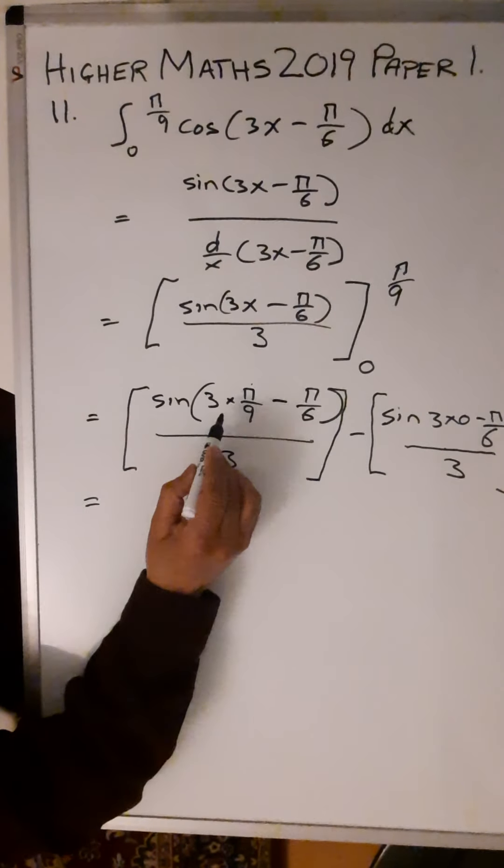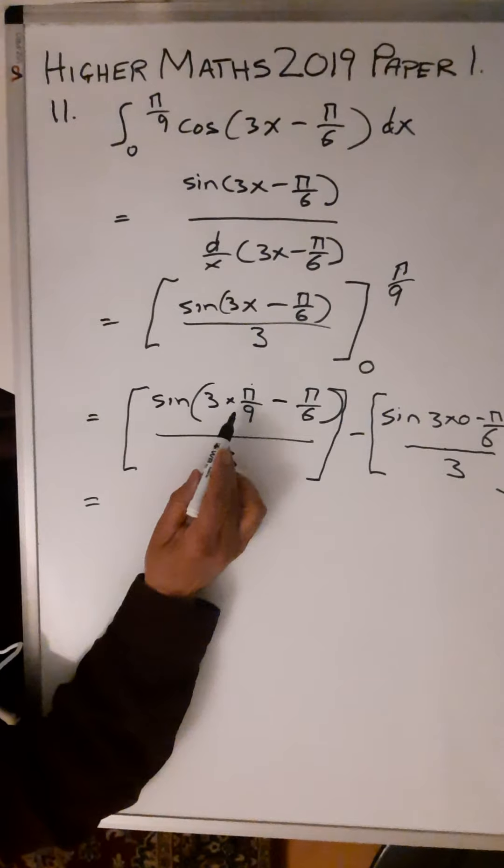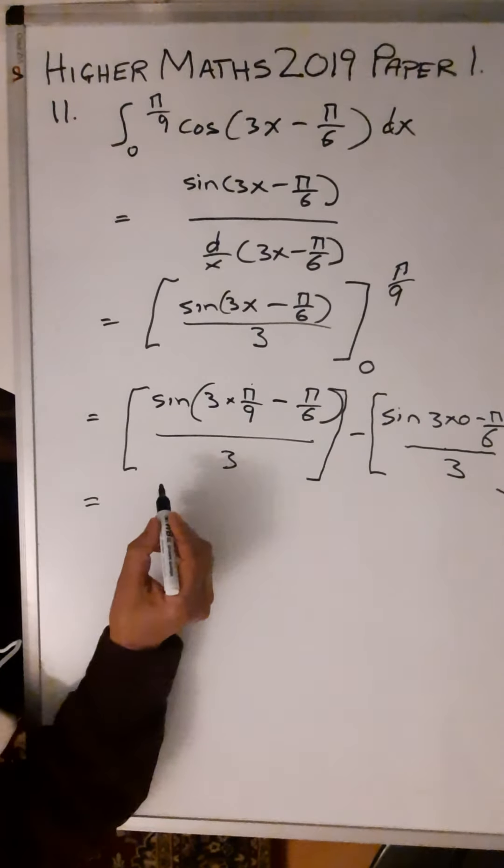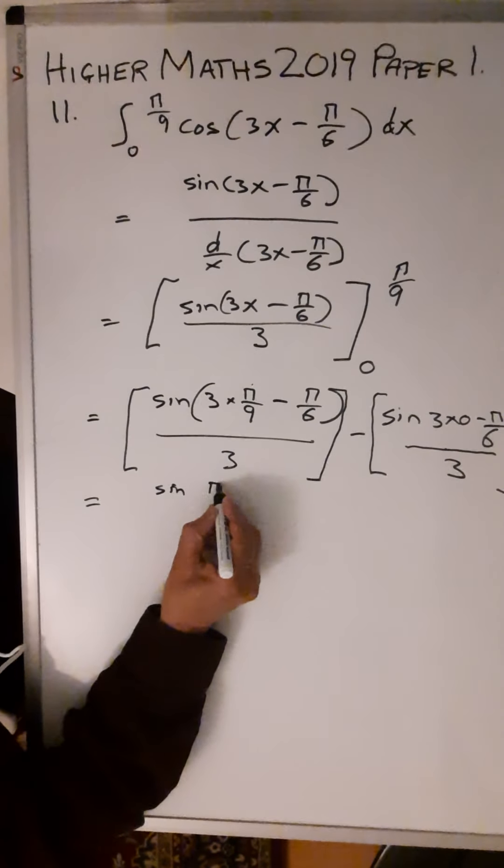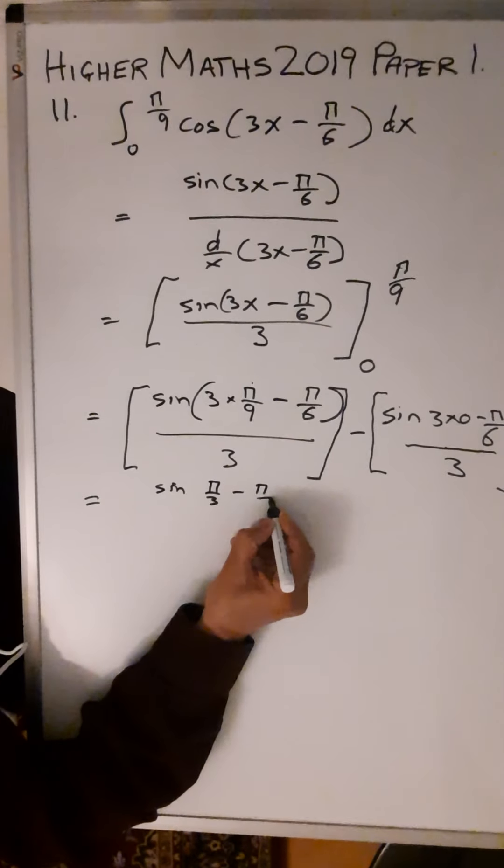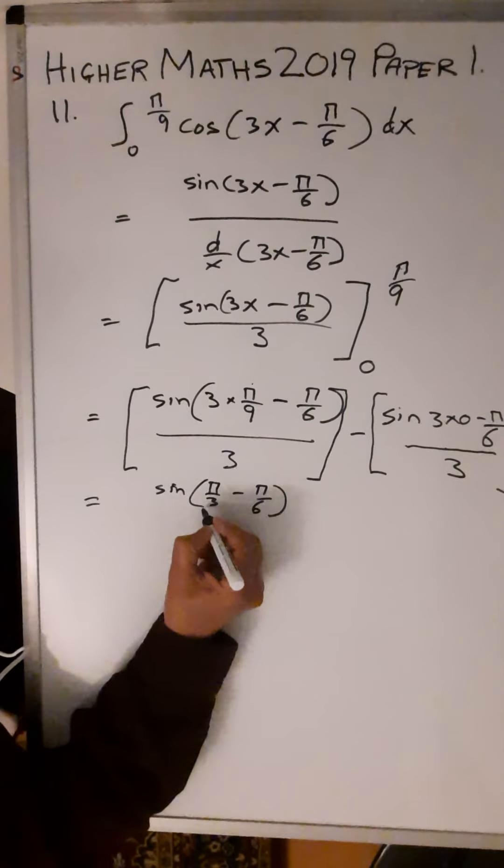So sin(3π/9) is just π/3. π/3 - π/6, so sin(π/9) is just π/9 minus π/6 over 3.